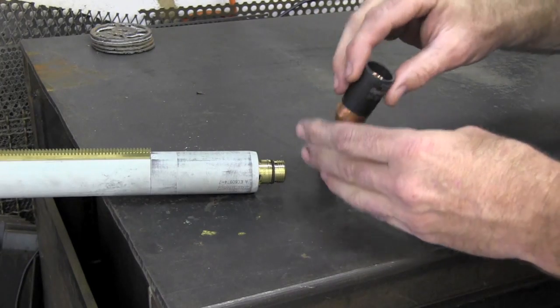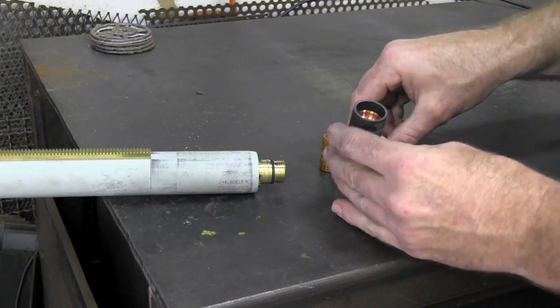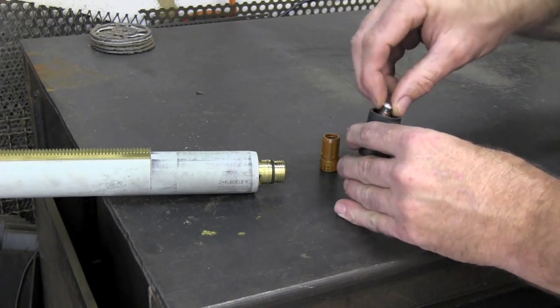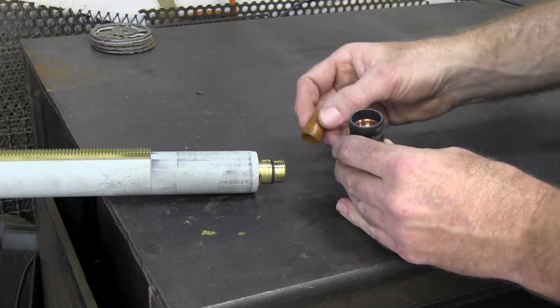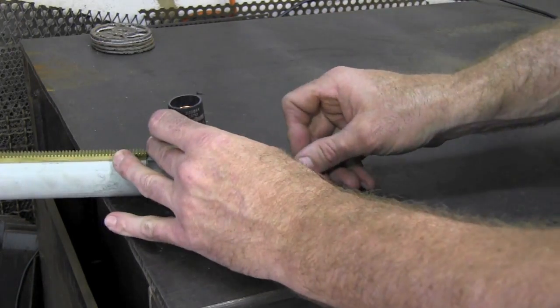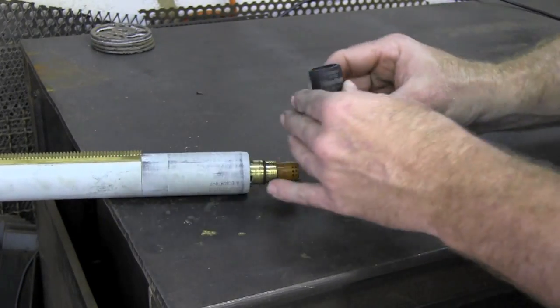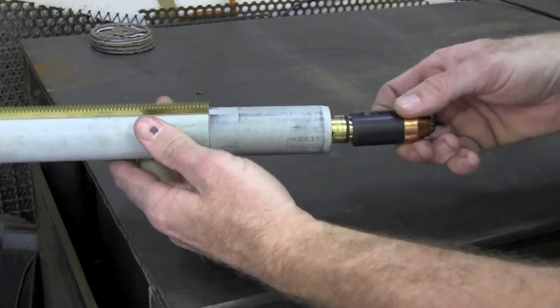You drop down your nozzle in there, get that to fit, and you'll drop your electrode down in and then you can just take this and attach this up in here and you're going to screw everything down now.